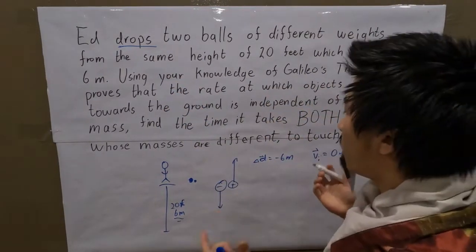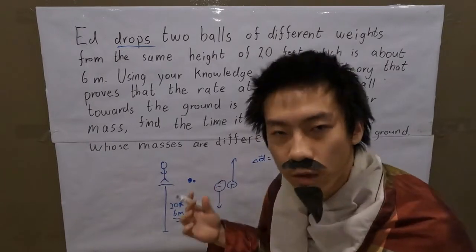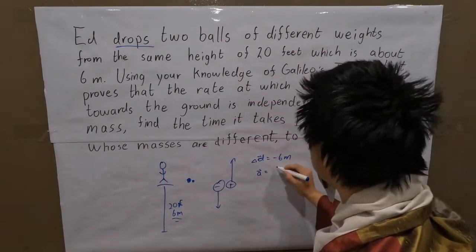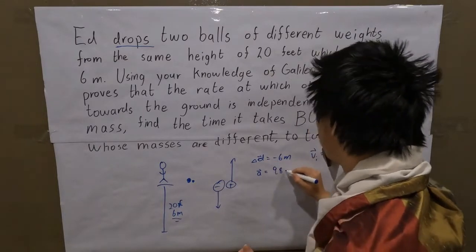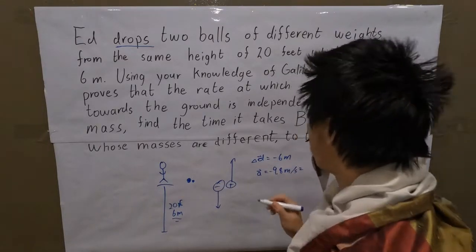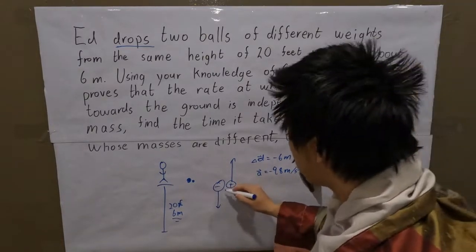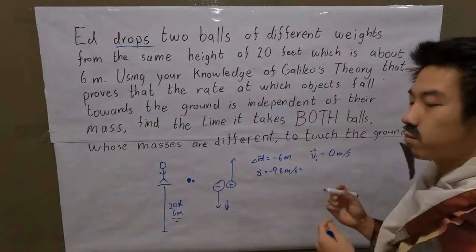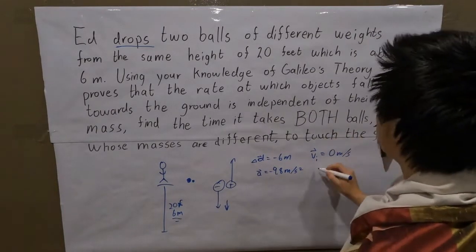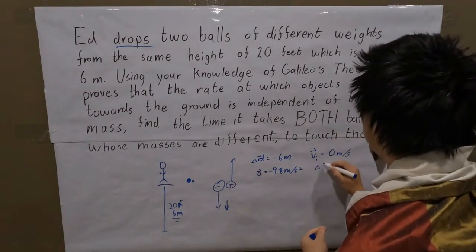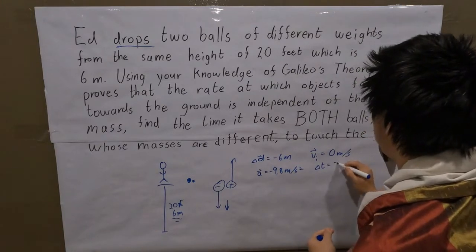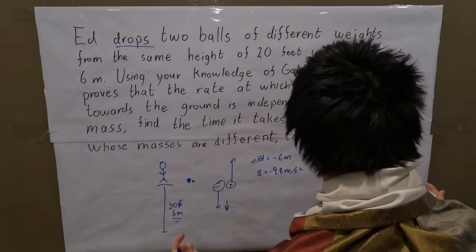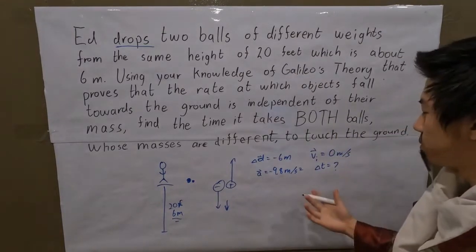Any object falling towards the center of the Earth is accelerating at 9.8 meters per second squared — negative 9.8 meters per second squared because that is a downward force, downward acceleration, so it's negative. And we are trying to find time, or change in time. We don't know what it is — we want to find it. What is the best equation to use?